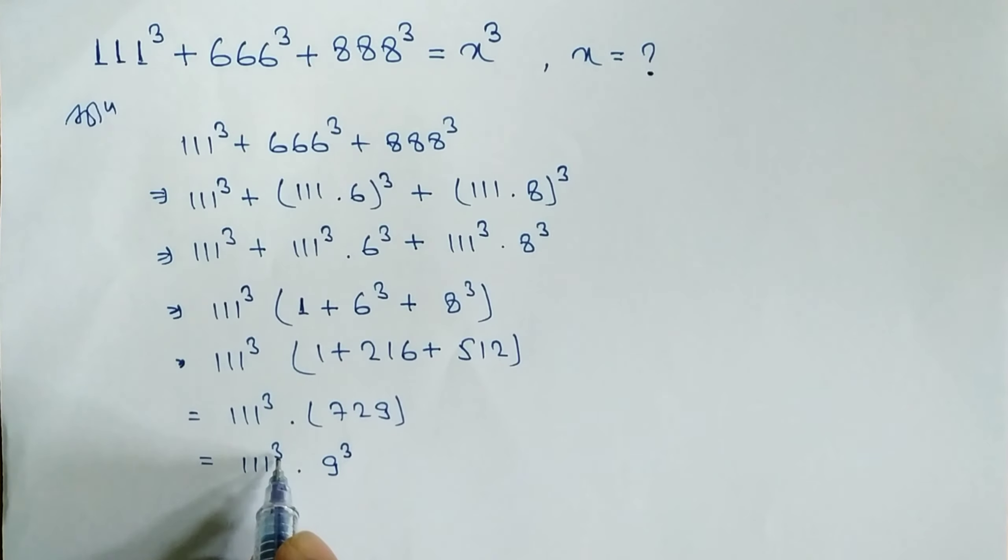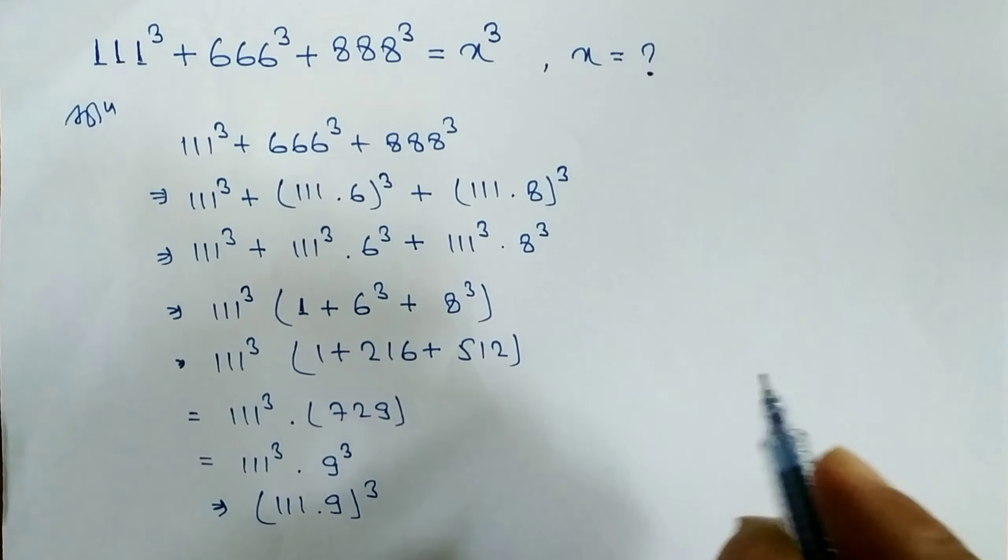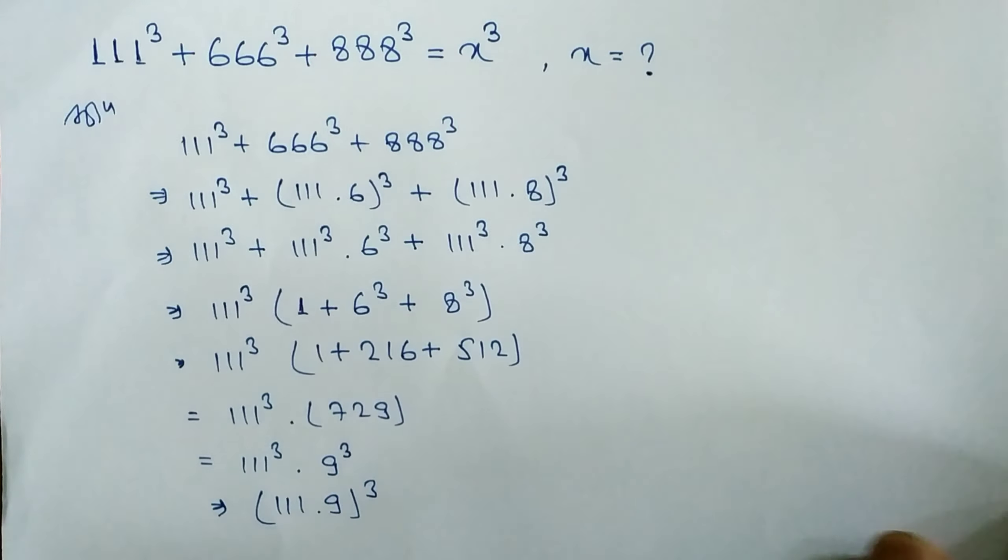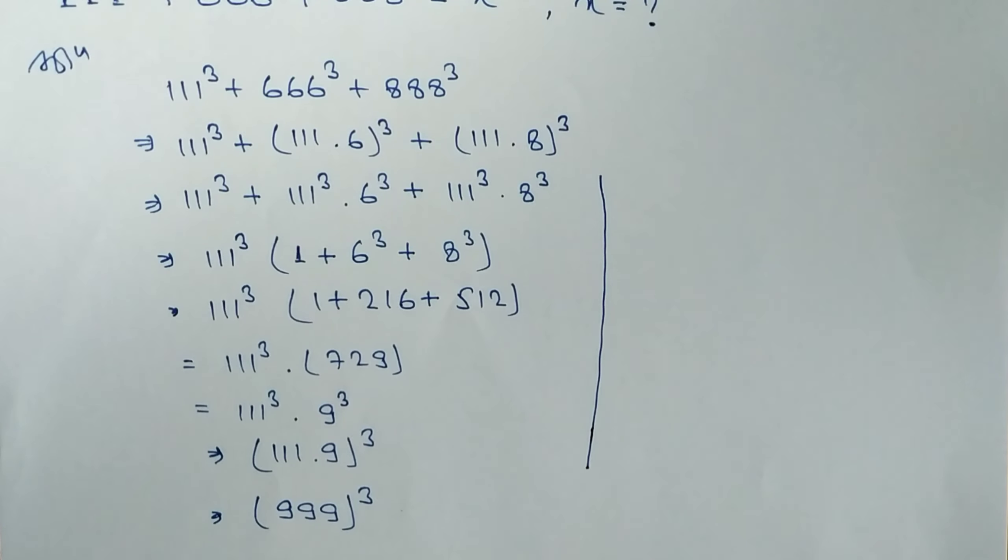So we can write here 111 × 9 whole power 3. So what we can write? When you multiply, we get here 999³. Thus 111³ + 666³ + 888³ is equal to how much?